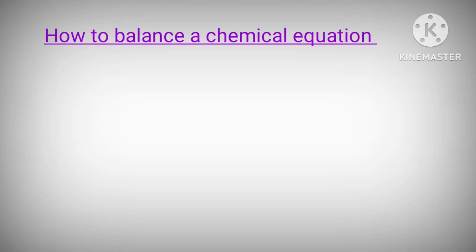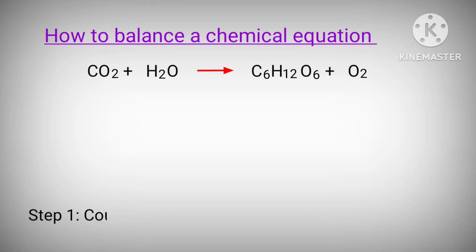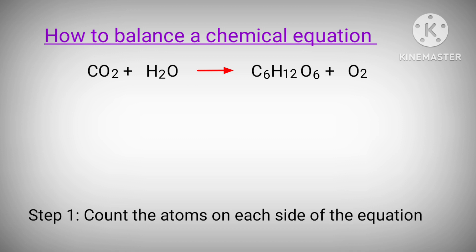How to balance a chemical equation. Step 1: count the atoms on each side of the equation.